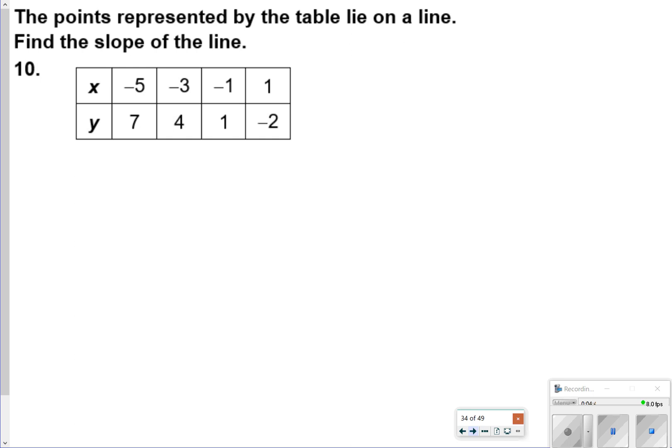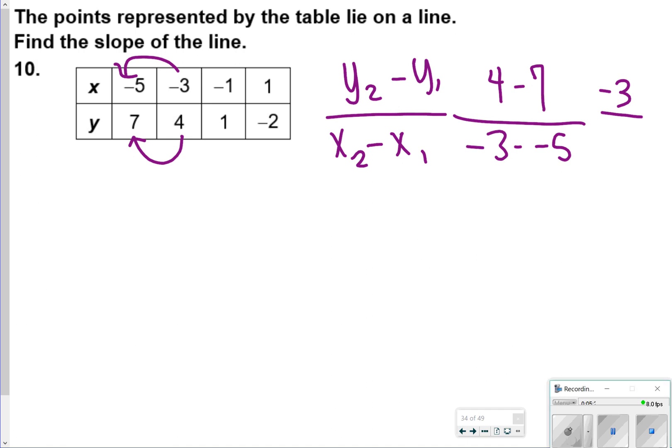For number 10, the points are represented by the table that lie on a line, so find the slope. Remember, we can find the slope by doing y2 minus y1, or the change in y, over x2 minus x1, or the change in x. So I'm going to do 4 minus 7, and then I'll do the same thing here, 3 minus negative 5. 4 minus 7 gives me a negative 3, and 3 minus negative 5 gives me an 8. But I did switch those around. I just forgot to put my negative 3 there. So negative 3 plus 5 will give me a 2. So my slope would be negative 3 over 2.